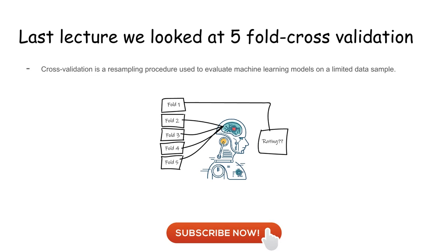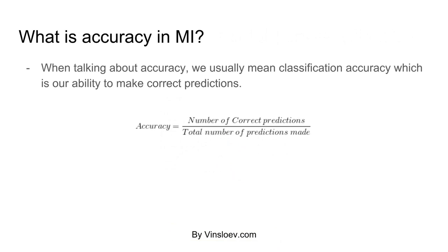But now let's continue with the accuracy matrix. So what is accuracy in machine learning? When talking about accuracy we usually mean classification accuracy, which is our ability to make correct predictions. Our overall goal when using machine learning algorithms is to have as accurate a result as possible. The accuracy can be measured as the number of correct predictions divided by the total number of predictions made.